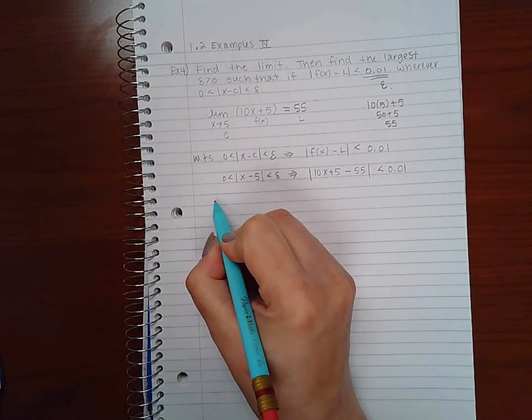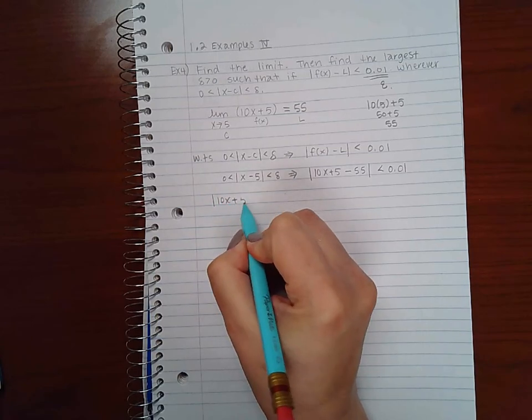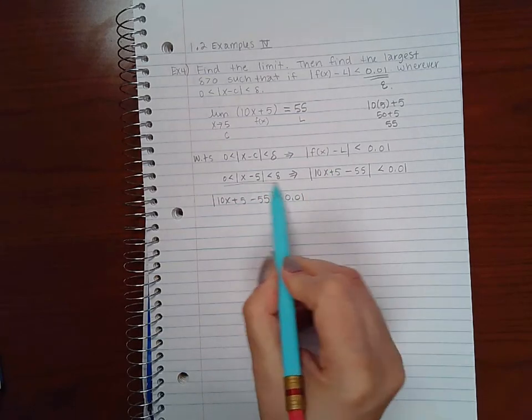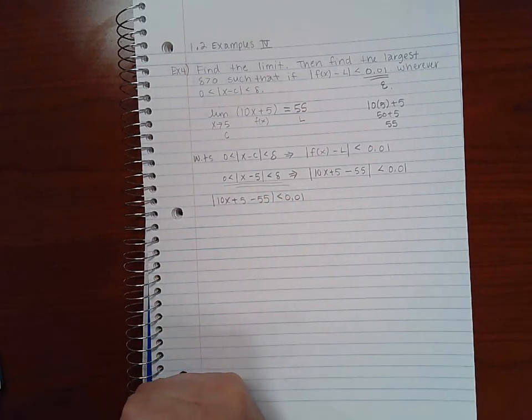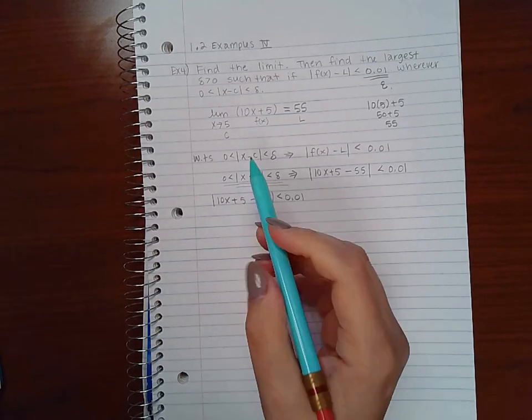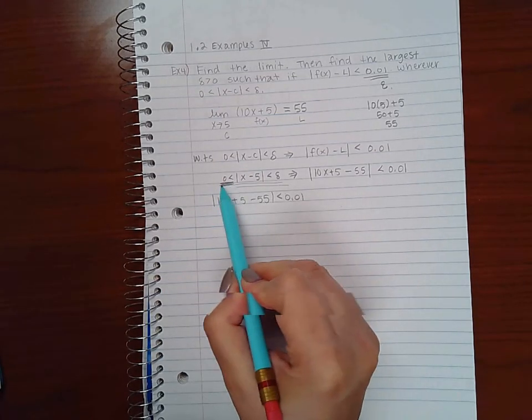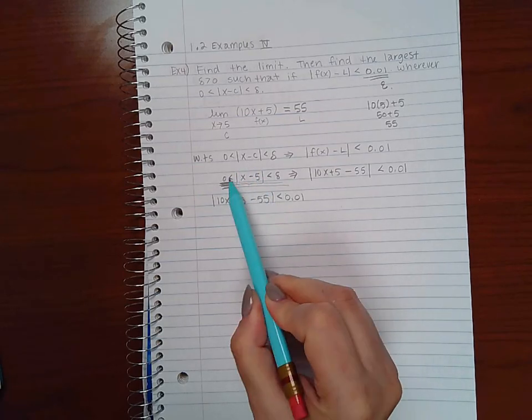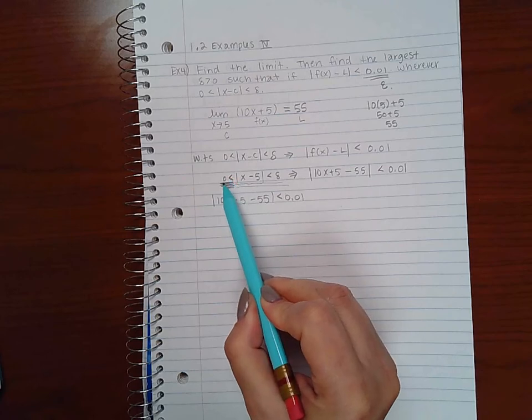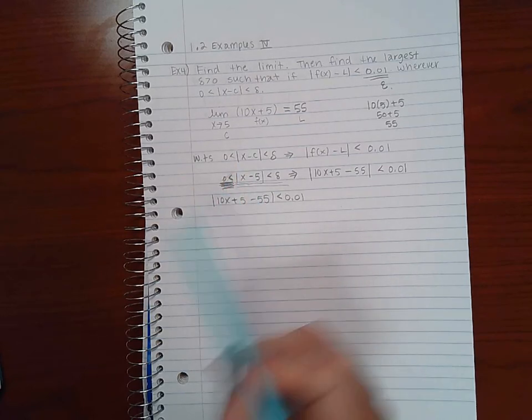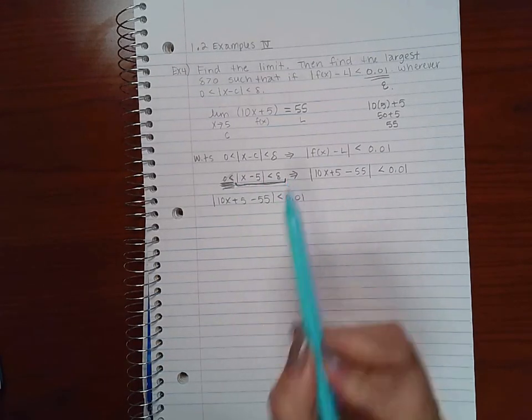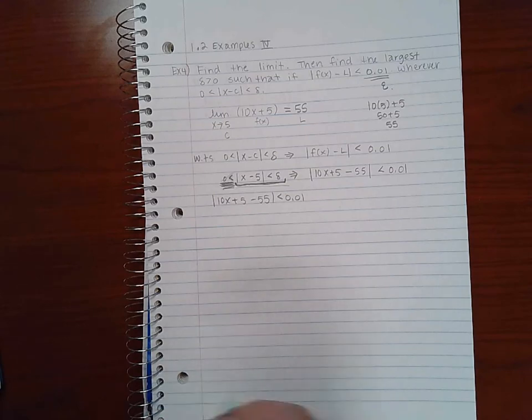So if we start with this statement here and we manipulate it until we get this statement here, we can find that delta. Now I don't need to worry about this part of the statement because I have absolute values. This value is always going to be positive, which means it's always going to be bigger than zero. So you don't really need to prove this part of the statement, it's this part that you need to concentrate on.